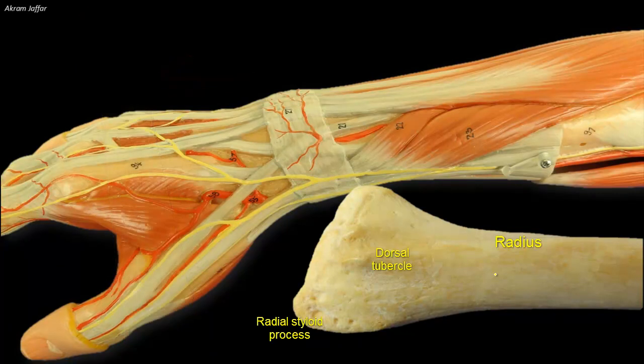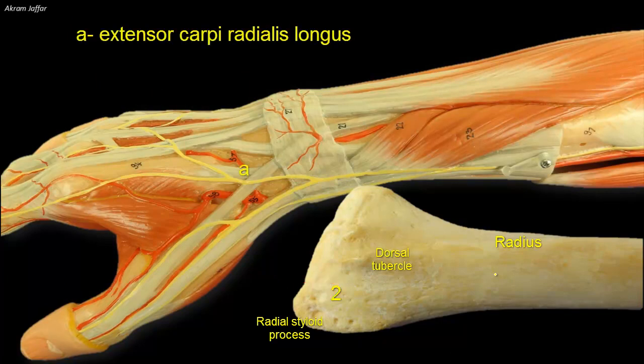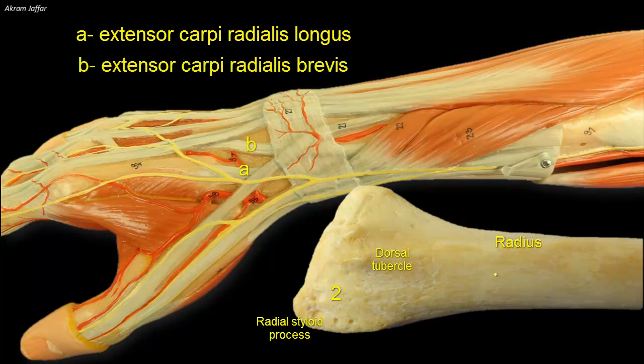A broad groove lies lateral to the dorsal tubercle, forming a second compartment, which lodges the flat tendons of extensor carpi radialis longus and brevis. These tendons are on their way to be inserted into the bases of the second and third metacarpal bones, respectively.